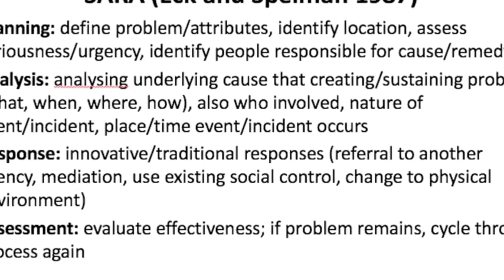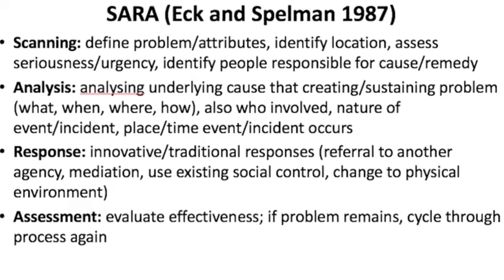The response also needs to be innovative. Sometimes you use traditional responses, but you also need to use that in combination with a range of innovative responses. So it might be things like a referral to another agency, mediation processes, use of existing social controls that are already in place, and of course changes to the physical environment like putting in lights. The responses really can be so incredibly diverse. Assessment is evaluating the effectiveness overall. If the problem remains, then the cycle process happens again — they start from the beginning and go through it all over again.